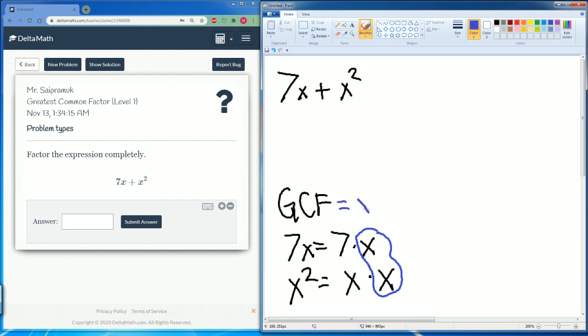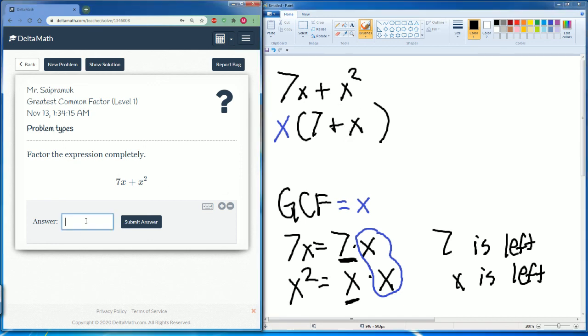So it's x. Now we put a parentheses and see what is left over. We see a 7 is left here, and an x is also left down here. So that's your answer: x(7 + x). Close the parentheses.